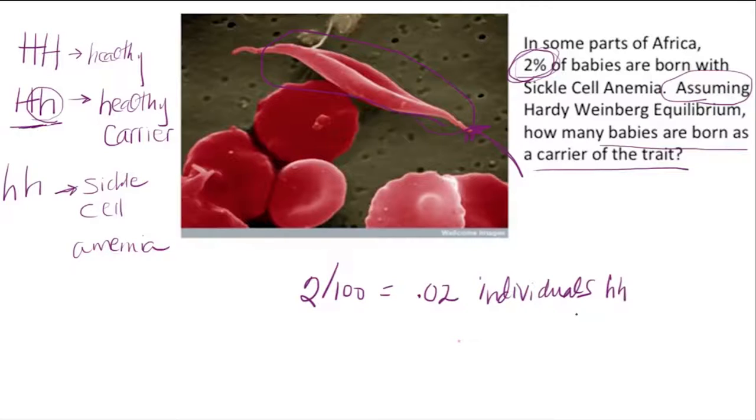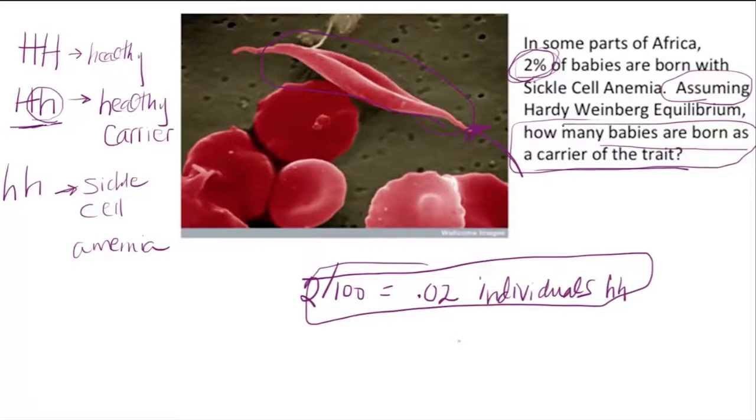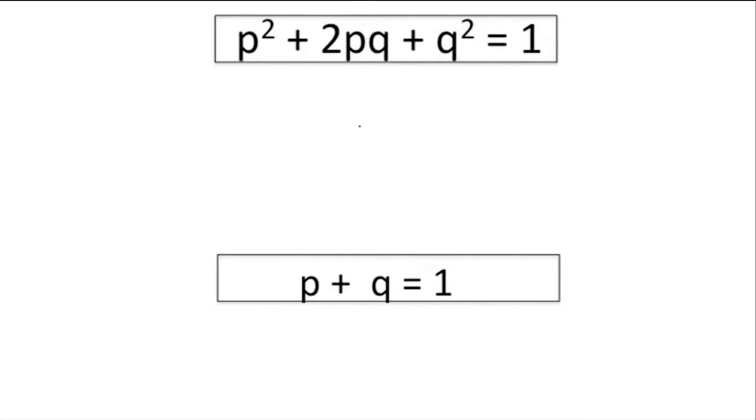What we need to do is understand what this equals in our Hardy-Weinberg equation so that we can figure out the answer to our question, which is how many babies are born as a carrier, which would be how many babies have this particular genotype.